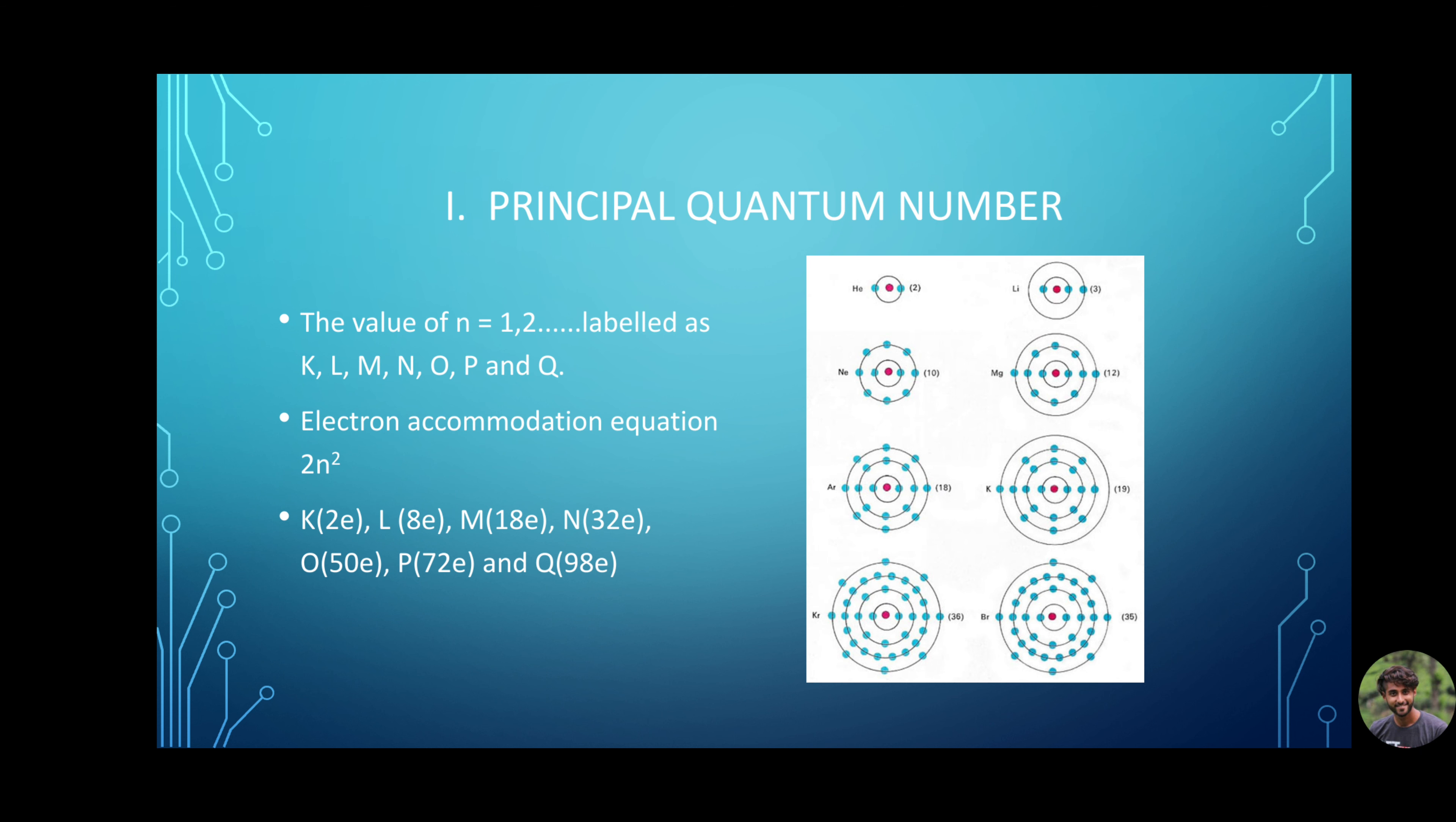First, principal quantum number. This was the first description of an atom when we were in junior schooling. An atom has a centralized nucleus and electrons revolving around it in orbits just like the solar system. Today, we know it is much more complex, but let us start from there only. This quantum number describes the electron shell or energy level of an electron. The value of n ranges from 1 to the shell containing the outermost electron of that atom. That is, n equals 1, 2, 3, etc.